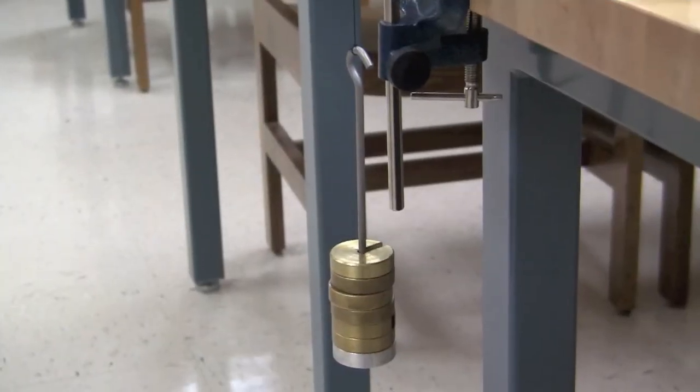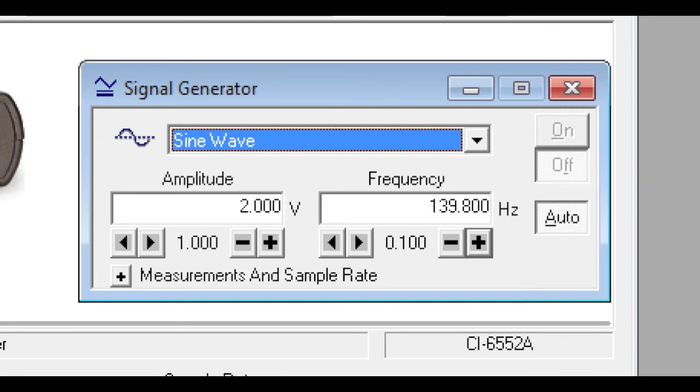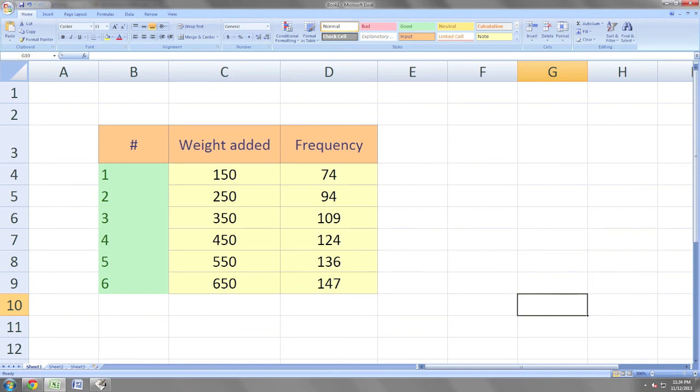For part 2, choose 6 masses between 100 grams and 1 kilogram of weight and record the values. Then determine the resonance frequency of the string under these different tensions and record your results.